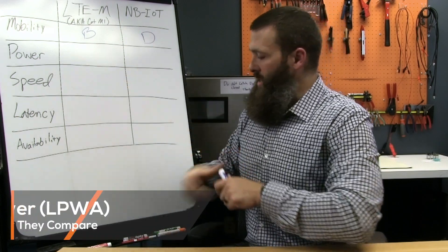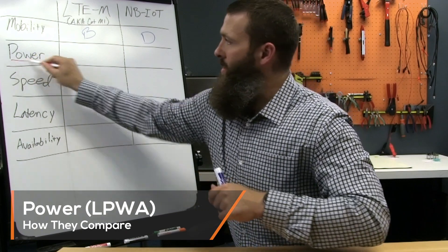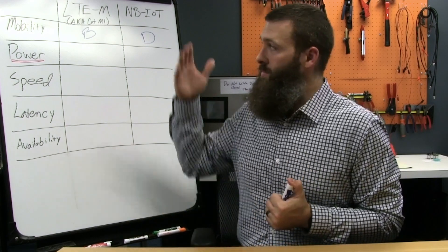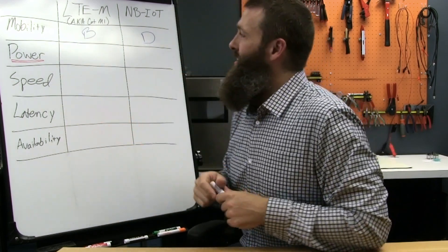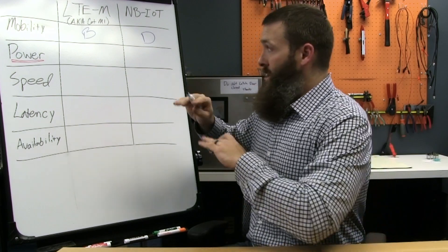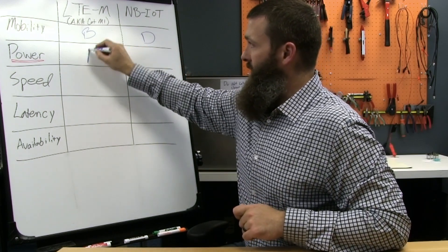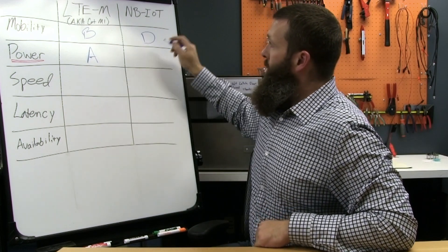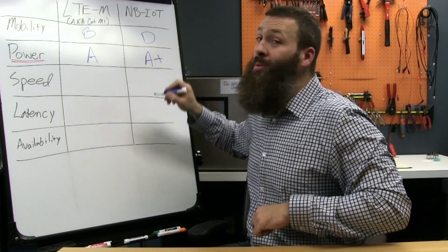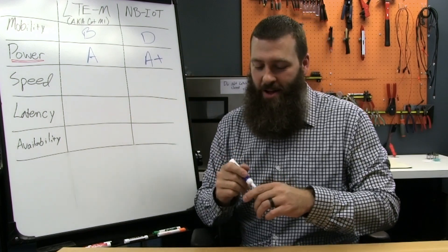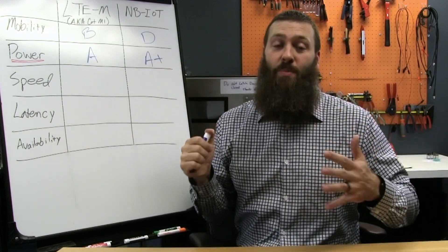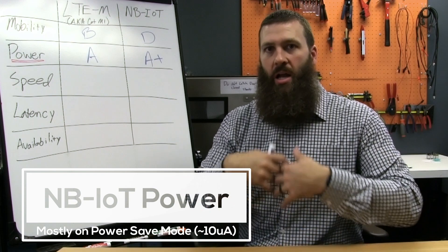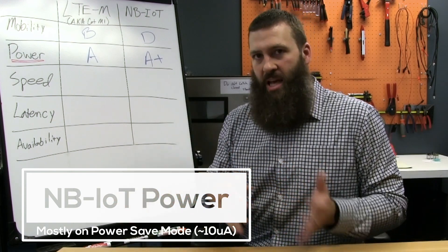The killer feature for all of these — we're talking about low power wide area networking — power is a pretty big deal. LTE-M gets an A. It's very very low power, especially given the flexibility and throughput it offers. NB-IoT gets an A+. It's that good. NB-IoT is super super low power, and again the registration state approach eliminates a lot of overhead and a lot of the things that consume more power.